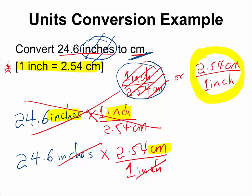Now, if you enter this into your calculator, 24.6 multiplied by 2.54, it should give you 62.484 centimeter. But that is not going to be the final answer.